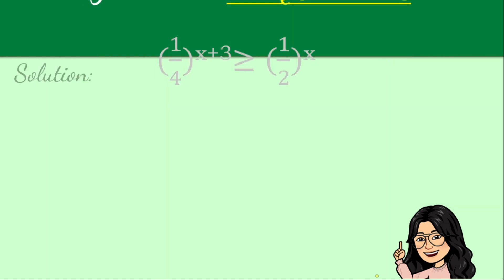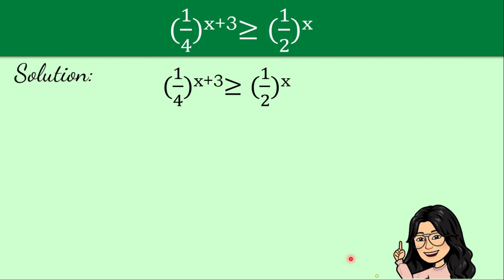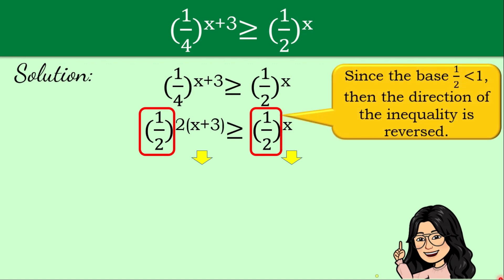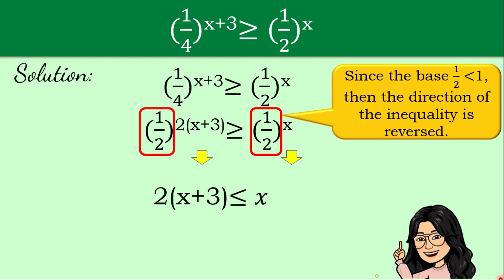Let's copy the inequality and express one-fourth as one-half squared, keeping the exponent x plus 3 and the rest of the given inequality. Since they now have the same base — one-half — we can copy the exponents. But we must note that since the base one-half is less than 1, the direction of the inequality is reversed. The given was greater than or equal to, so reversing it gives us less than or equal to.